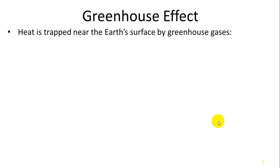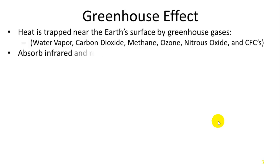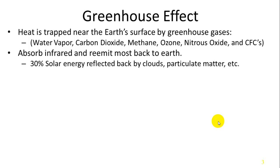These different gases have different effects on the atmosphere itself. Some of them display a phenomenon called the greenhouse effect — greenhouse gases. Heat is trapped near the Earth's surface by greenhouse gases which include water vapor, carbon dioxide, methane, ozone, nitrous oxide, and chlorofluorocarbons. They absorb infrared heat and then re-emit most of it back to the Earth, while some scatters back out to space.